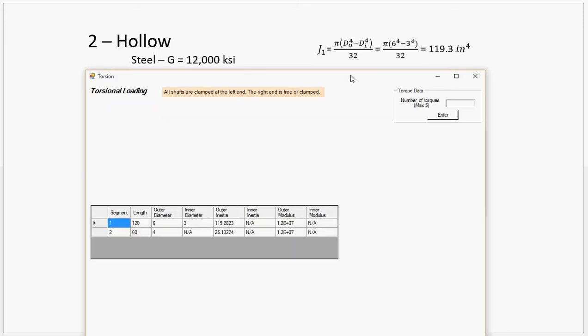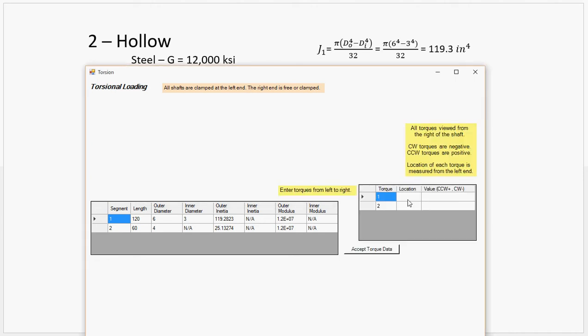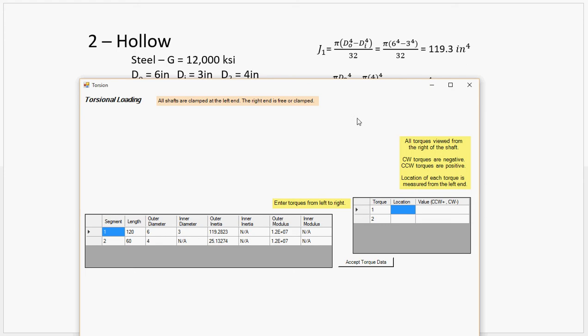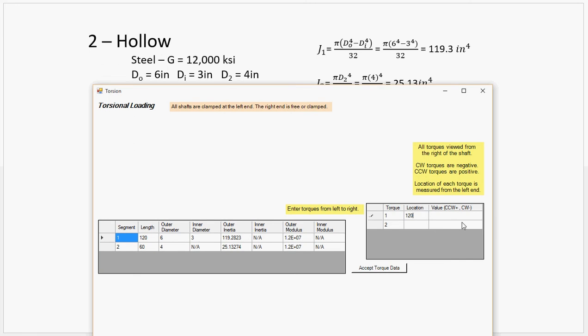Okay. So, then we can move on to adding our torque, of which there are two values. That last pop-up was about solving for torque if you're given power and angular rate and everything. We're just given the torque straight up in this. So, for the first torque, 20-foot kip counterclockwise, or in-clockwise, so it's negative. It's at 120 inches. Remember, that's kip, so that's 1,000 pounds. So, 20,000.